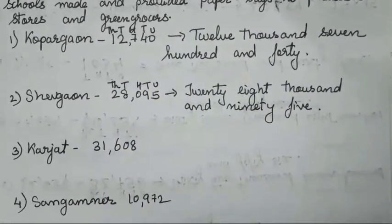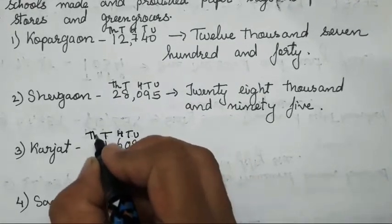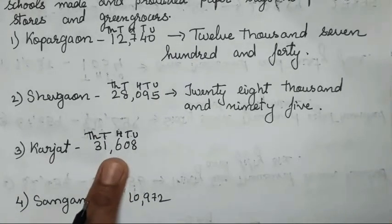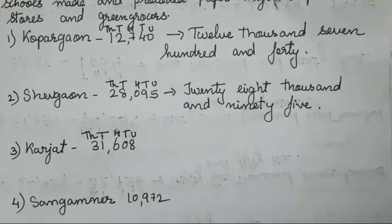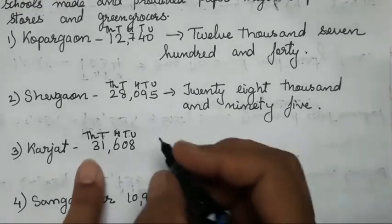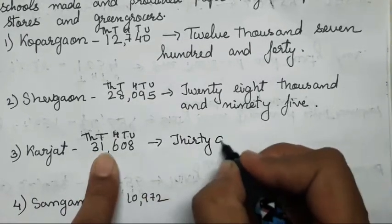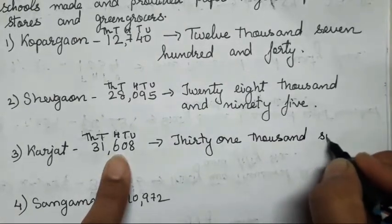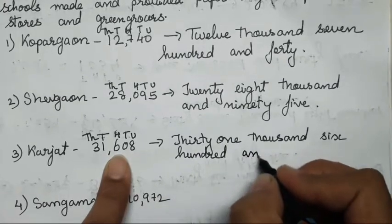Next is Karzat — unit, tens, hundred, thousand and ten thousand. These are the number of paper bags the talukas have been provided with. You'll have to only read it the way it has been given — so: thirty one thousand six hundred and eight.